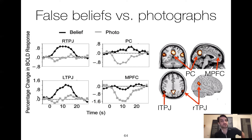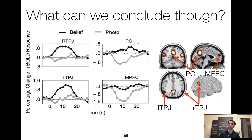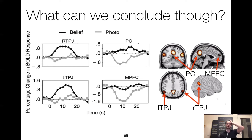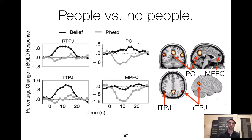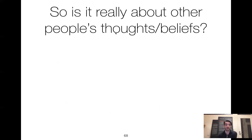The problem with this study as shown thus far is: what exactly can we conclude? I've shown someone false belief studies and false photo studies, and there's a pretty big confound. Sure, the false belief situations have minds at work and the false photographs don't. But there's another more basic thing that differentiates them, which is people versus no people. There are people involved in the false belief story and no people in the false photo story. So is it really about other people's thoughts and beliefs, or maybe it's just about people versus no people?